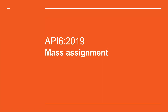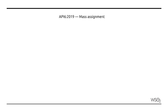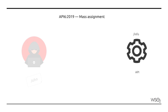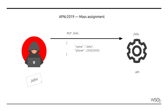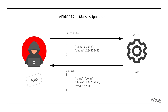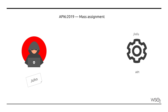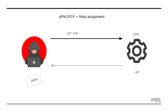Mass Assignment. An API exposes a resource which allows users to update their personal information. John updates his information and sees that the response returned to the application contains a default value for the credit balance, which was not specified in the request sent by John's application. Retrieving his personal information confirms to John that the credit balance is read-only data, which is not meant to be updated by the application and is maintained by the system.